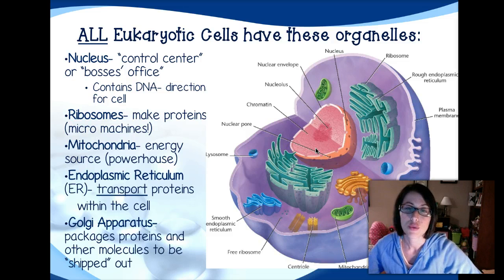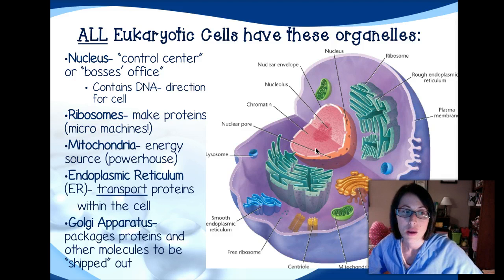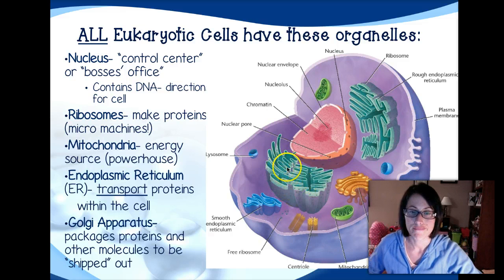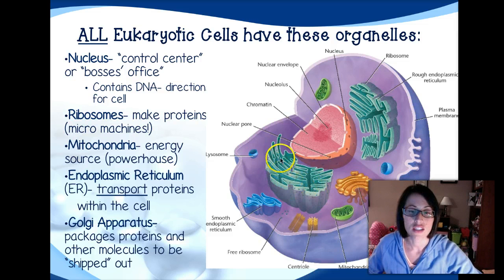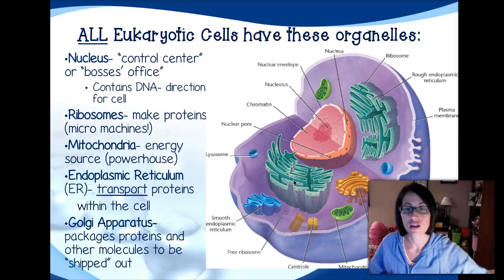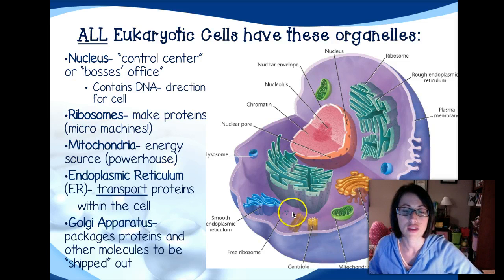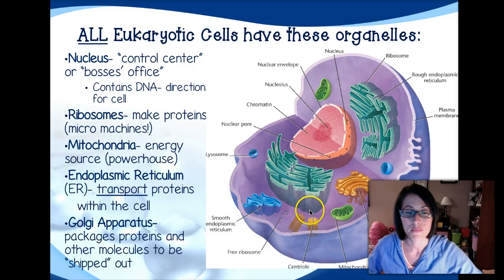The next one is ribosomes. We already talked about ribosomes, but they're really important so we're going to talk about them again. Ribosomes make proteins — they're like little mini machines or little mini factories inside of these cells. There are some floating around free in the cytoplasm, and then there are some attached to a big maze-looking structure we'll talk about in just a second. Those ribosomes attached to the maze are making proteins that will be shipped out of the cell, while the free-floating ones make proteins that stay inside the cell for the cell to use.